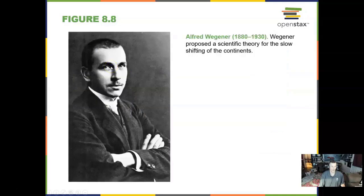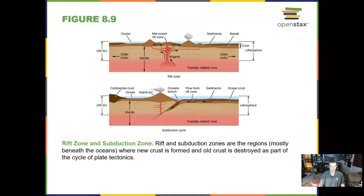Alfred Wegener — he only lived to be 50 years old. Wegener proposed a scientific theory for the slow shifting of continents. In this model, we can see a rift zone and a subduction zone, where magma can come together with lesser rock and cooler rock to make it even more explosive coming out.